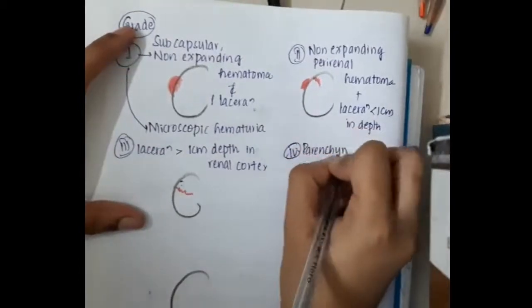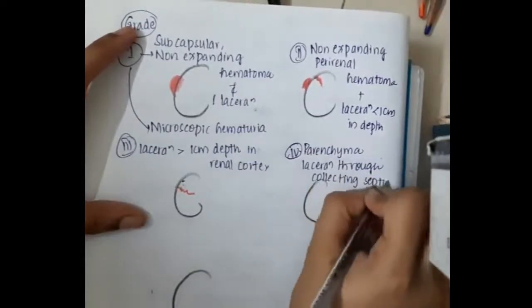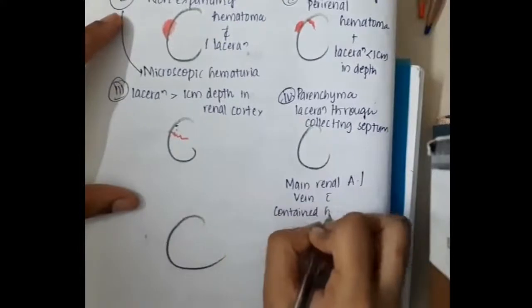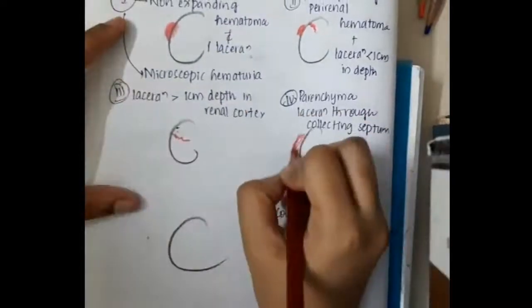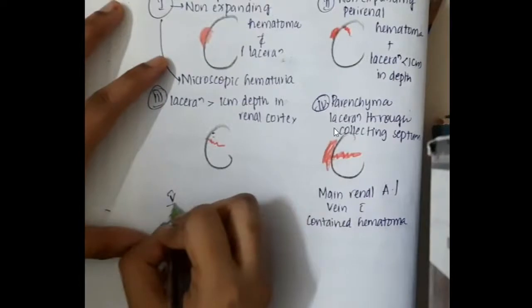Then in grade 4, we have parenchymal laceration seen through the collecting system. The main renal artery or vein with contained hematoma is seen. This is the hematoma. This is the parenchymal laceration which is seen.